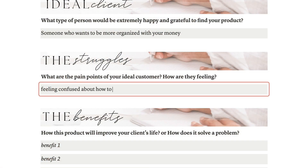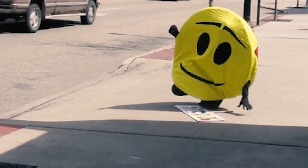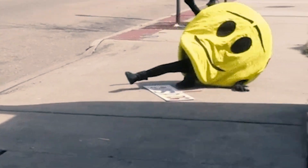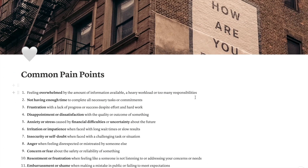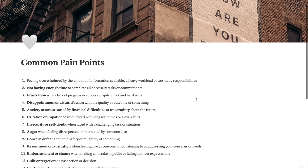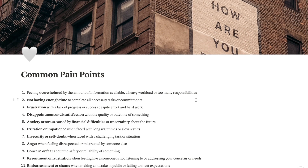Now it's time to put yourself in the shoes of your ideal client and try to imagine a struggle or a negative emotion they might be feeling that your product could help with. For example, they might be feeling confused about how to start saving money. Doing a little research on your target audience and using their own words to describe their struggles is super important. If you're looking for some quick inspiration, you can check out the common pain points page at the bottom of the template, where you can find the top 25 emotions that we as humans always try to avoid.